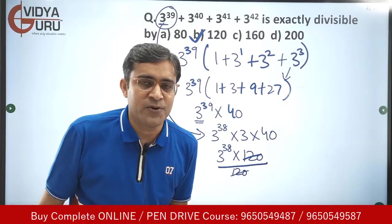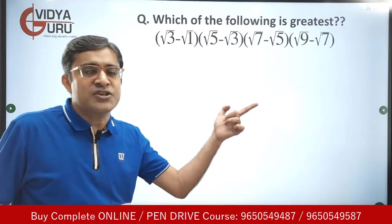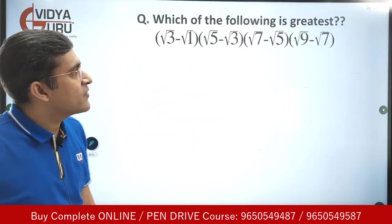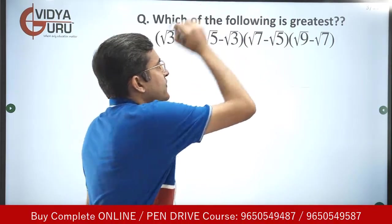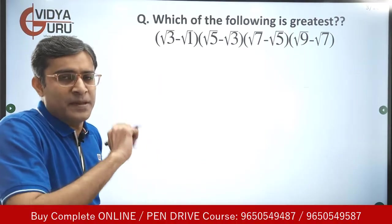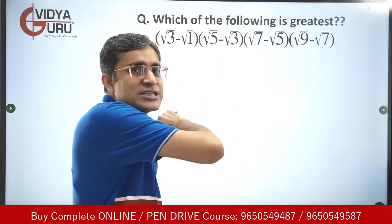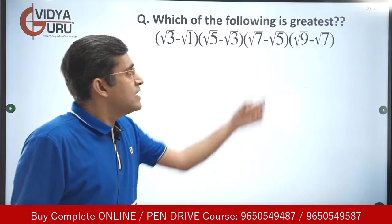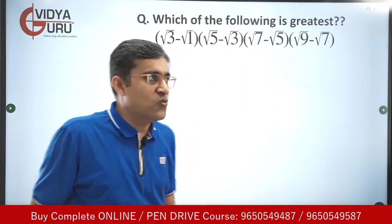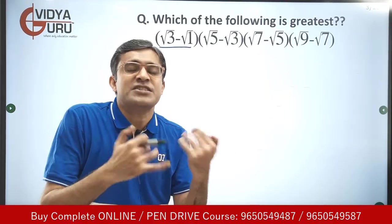Let's look at the next question. With each question the difficulty level is going to increase. We have to find which of the following is greatest — there are 4 terms. Observe something common in these four terms: in each term the gap between the two surds is 2. (√3 − √1: gap 2; √5 − √3: gap 2; √7 − √5: gap 2; √9 − √7: gap 2.) When you have such terms, the first thing we do is rationalize.